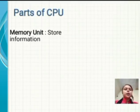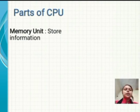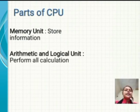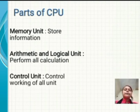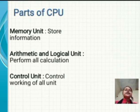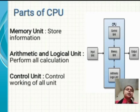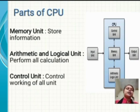Parts of CPU: first is memory unit, second is arithmetic and logical unit, and third is control unit. The memory unit stores information. The arithmetic and logical unit performs calculations. The control unit controls all parts of the CPU. As you can see in the diagram, it is divided into three parts: control unit, memory unit, and arithmetic logic unit.